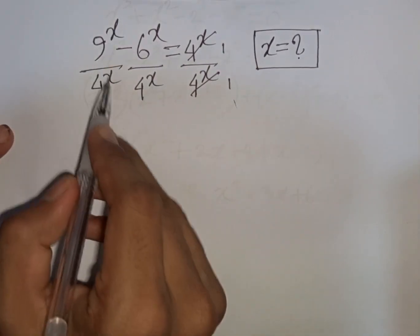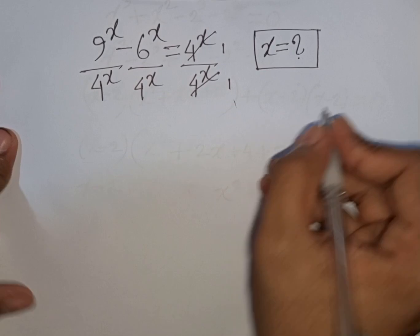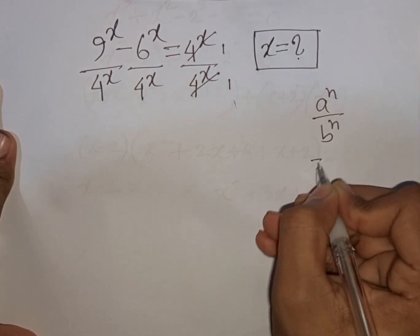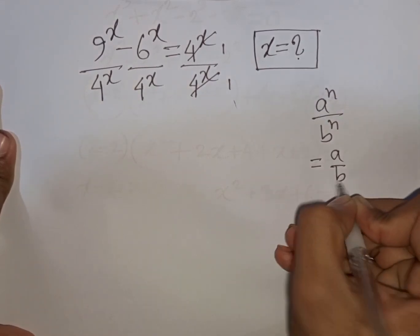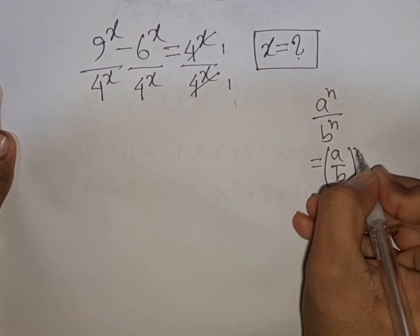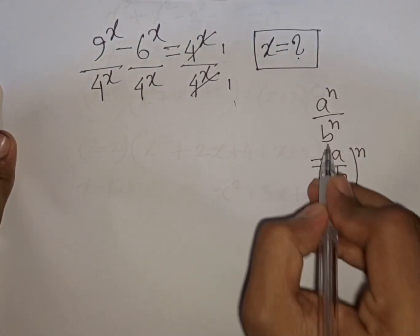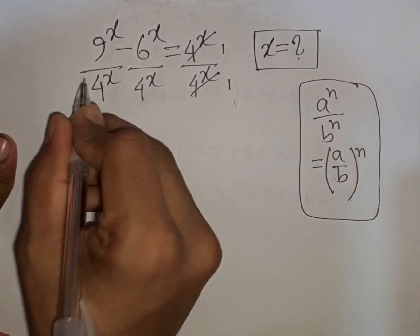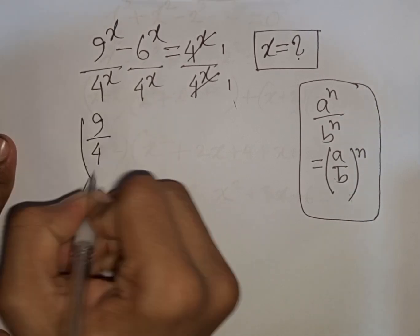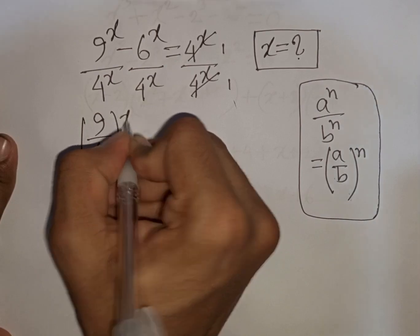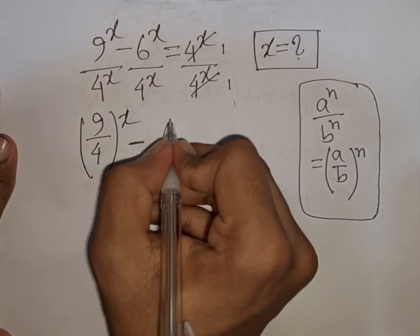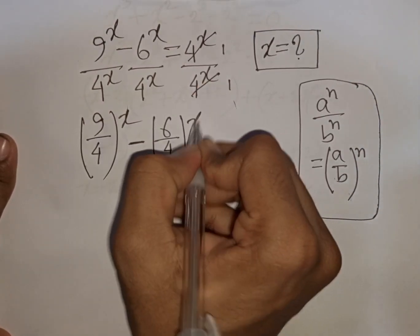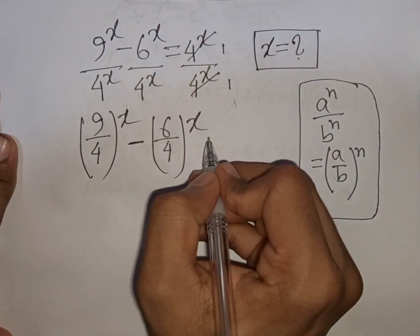Now we have x and x as the same power but different base. According to the exponential rule, a power n over b power n is equal to (a over b) to the common power n. So we can write here (9 over 4) to the power x minus (6 over 4) to the power x.